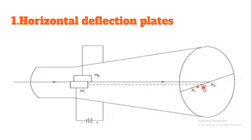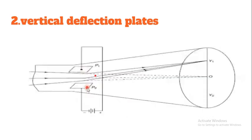This is the deflection of the electron beam. This is the attraction towards the H2 plate. This is the vertical deflecting plate. This is the P1 plate.